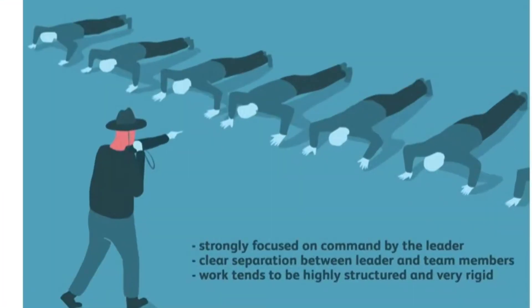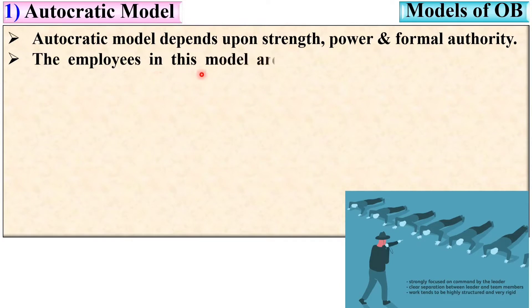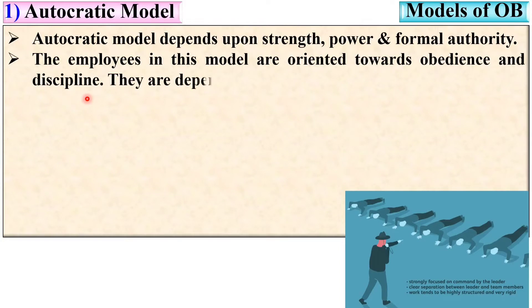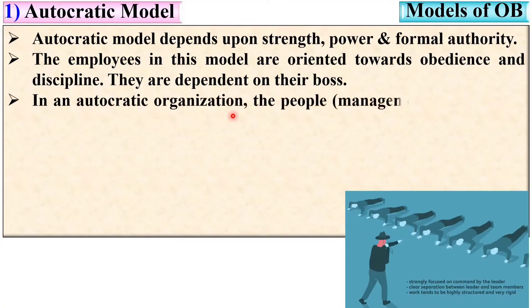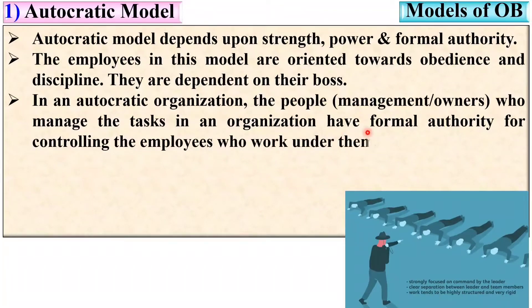The first model is the autocratic model. This model depends upon strength, power, and formal authority. In an autocratic organization, the management or owners have formal authority over controlling the employees who work under them.